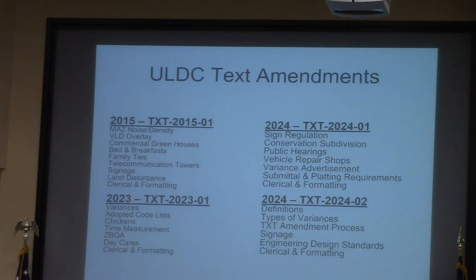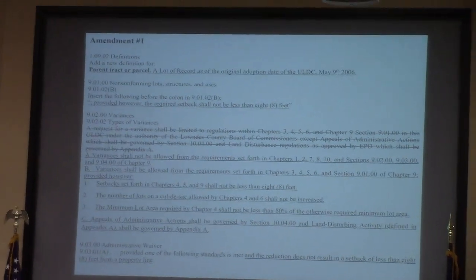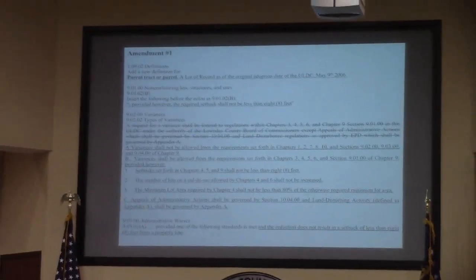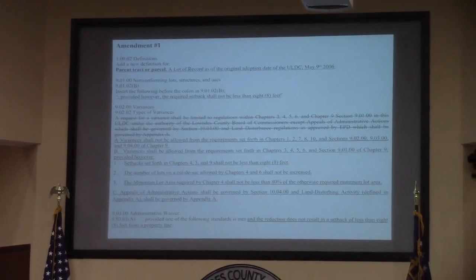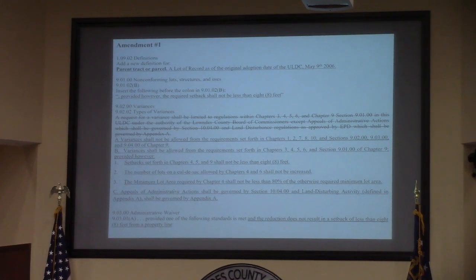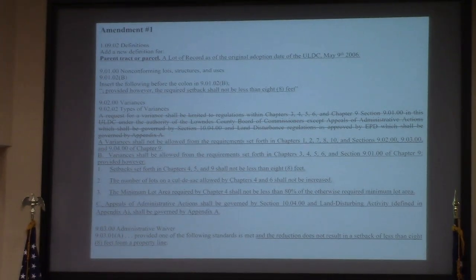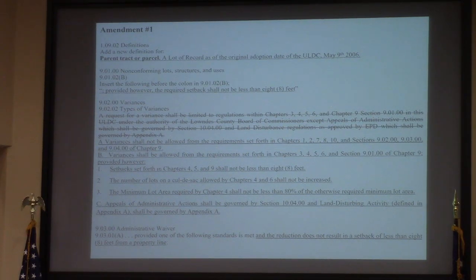You'll notice on this one we are looking to change some of the definitions, types of variances, some of the signage going forward, as well as some engineering design standards. Amendment 1 deals with quite a few things, but also it's aimed at not allowing any side yard setbacks being less than 8 feet. Most of these sections have influence on how setback could be reduced, and staff is of the opinion, along with county leadership, that 8 feet is the minimum we feel comfortable going with.